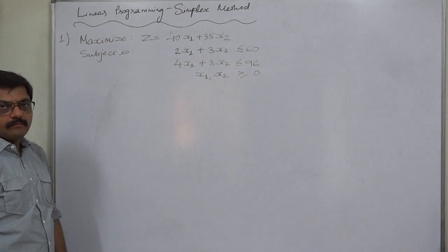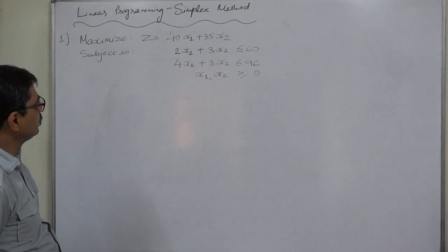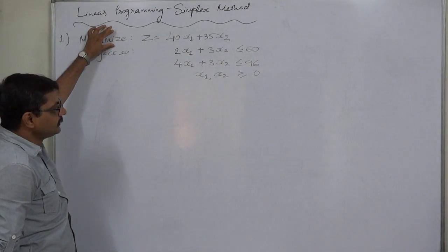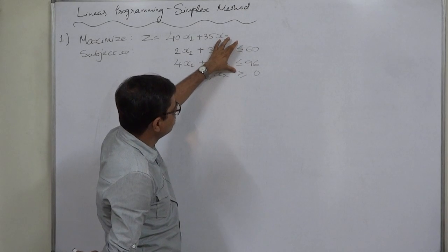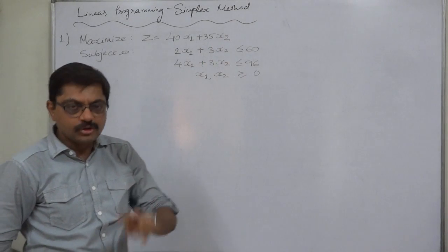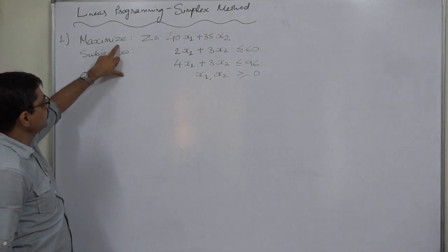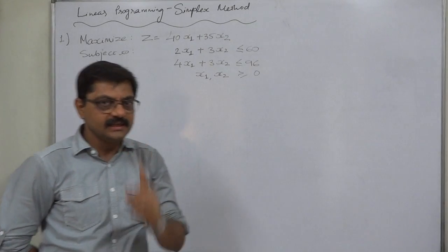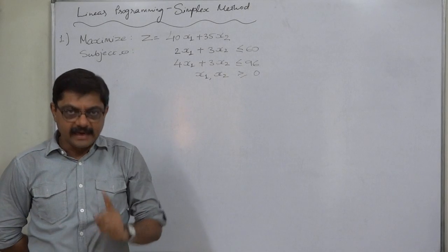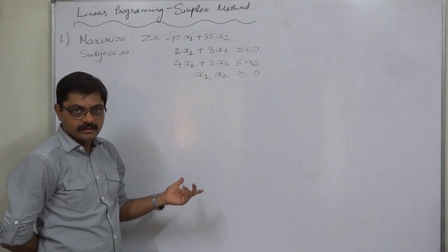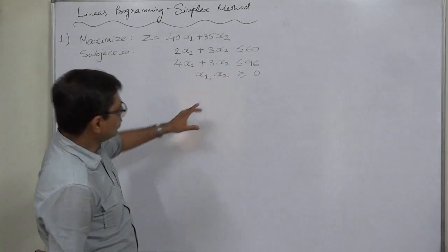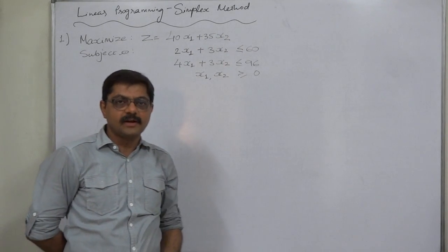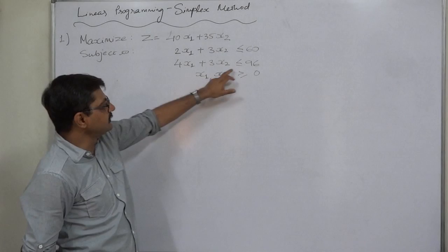When solving a linear programming problem through the simplex method, first check the objective — here it is maximize — and check the signs of the constraints, which are less than or equal to. These match each other: if the objective is maximize, ideally the constraint signs should be less than or equal to. It is not necessary in every problem, as it depends on the managerial situation, but this problem is in that favorable form.